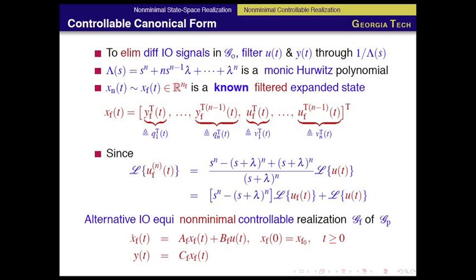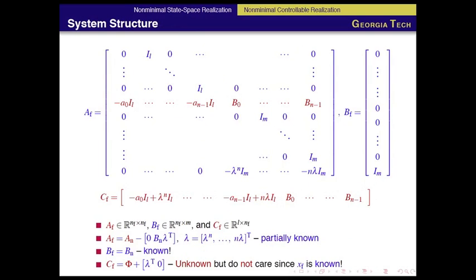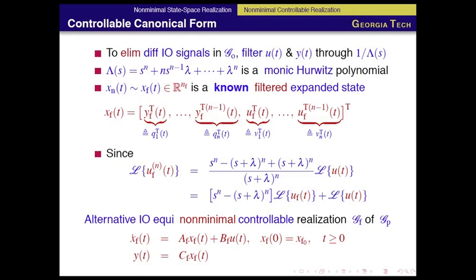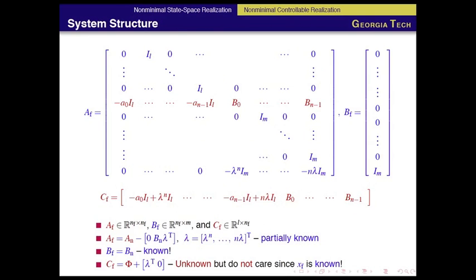This Af, Bf, Cf has some important characteristics. Here, Af, this part is known, nothing, this is zero, this is zero. Here we have lambdas. Lambda comes from this Hurwitz polynomial, so we know that part. Only red parts are unknown. Bf is totally known.